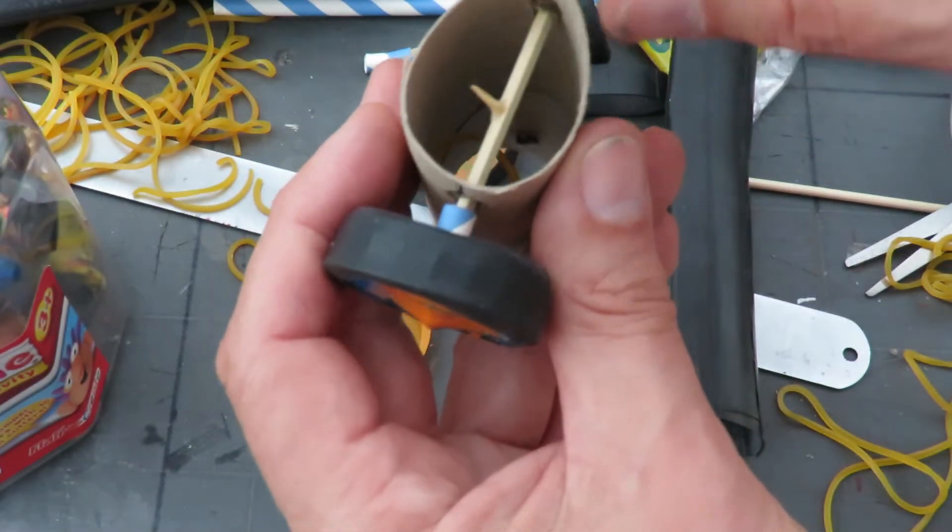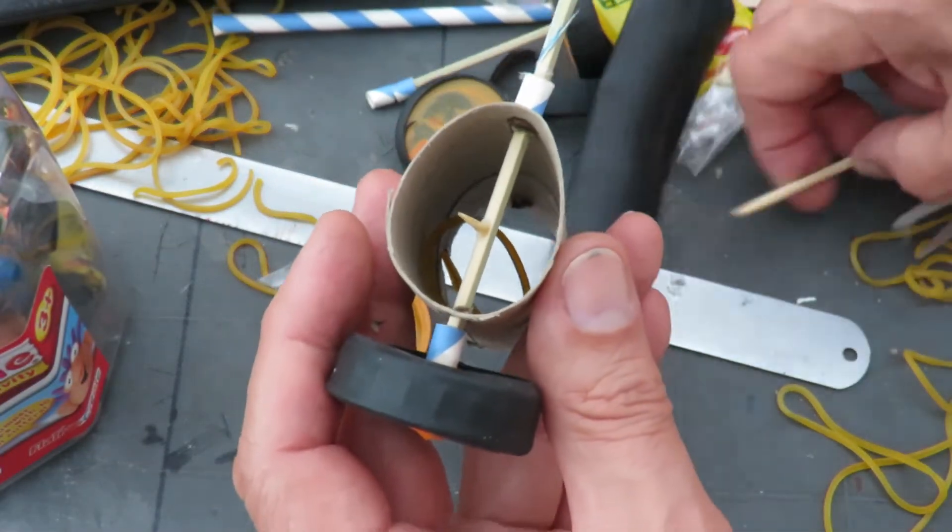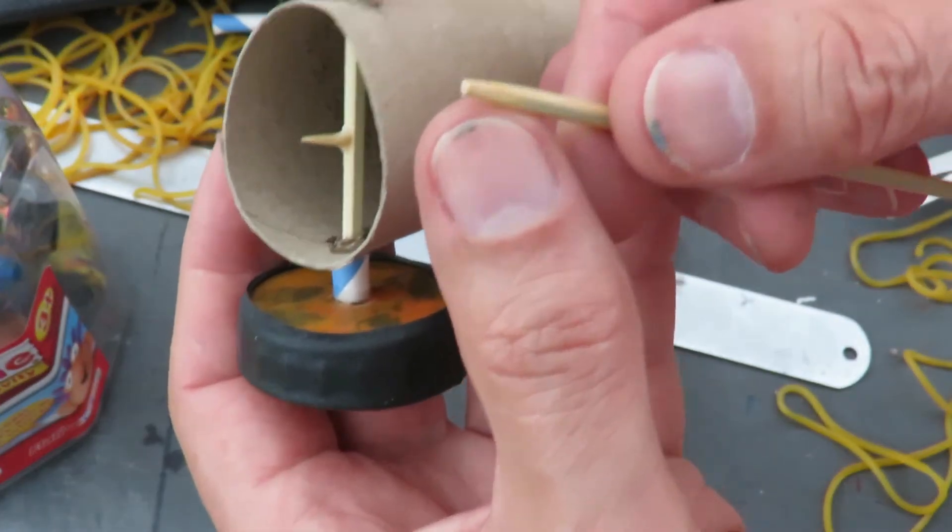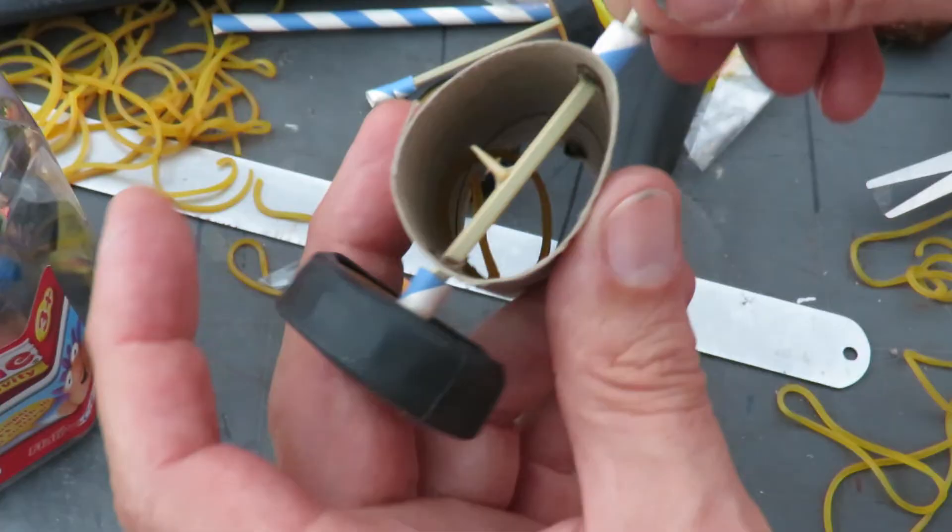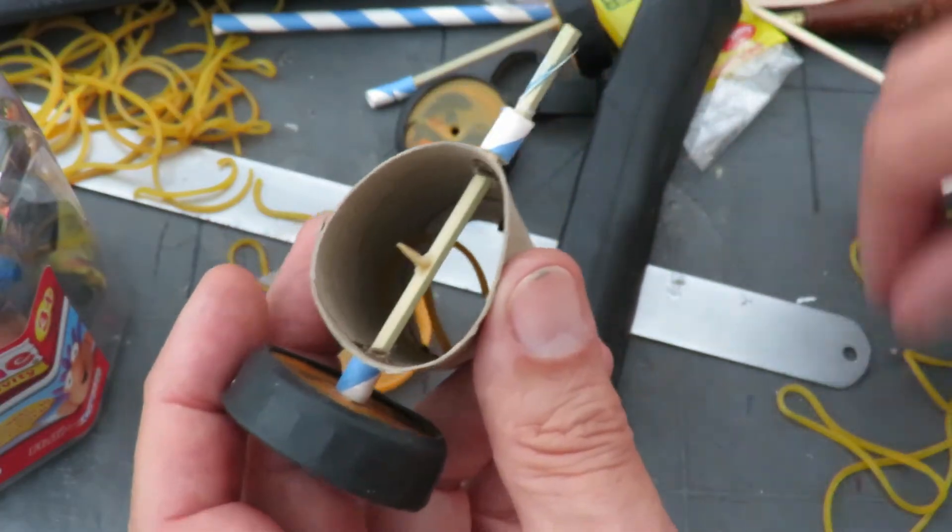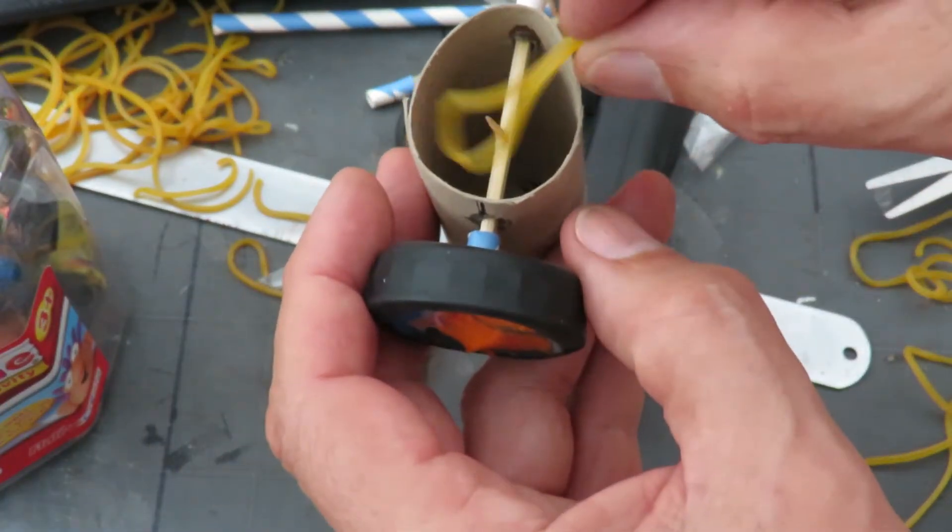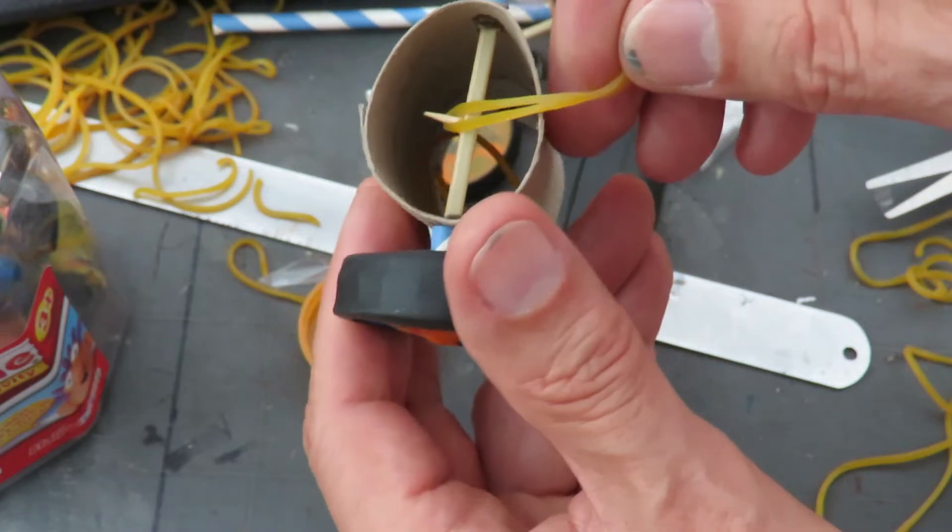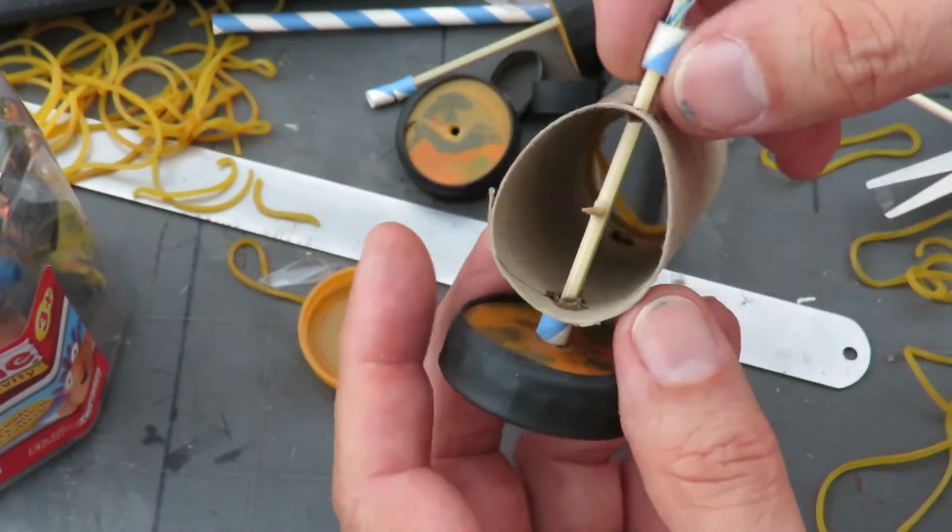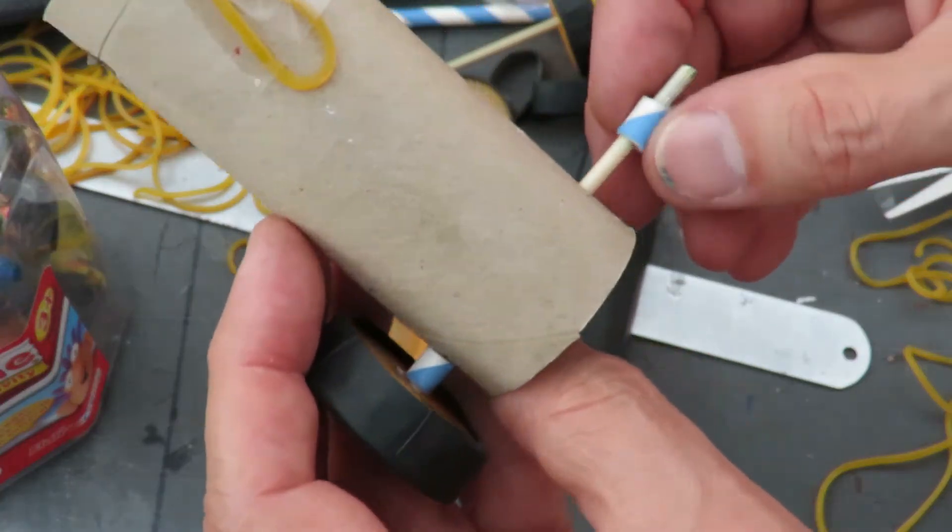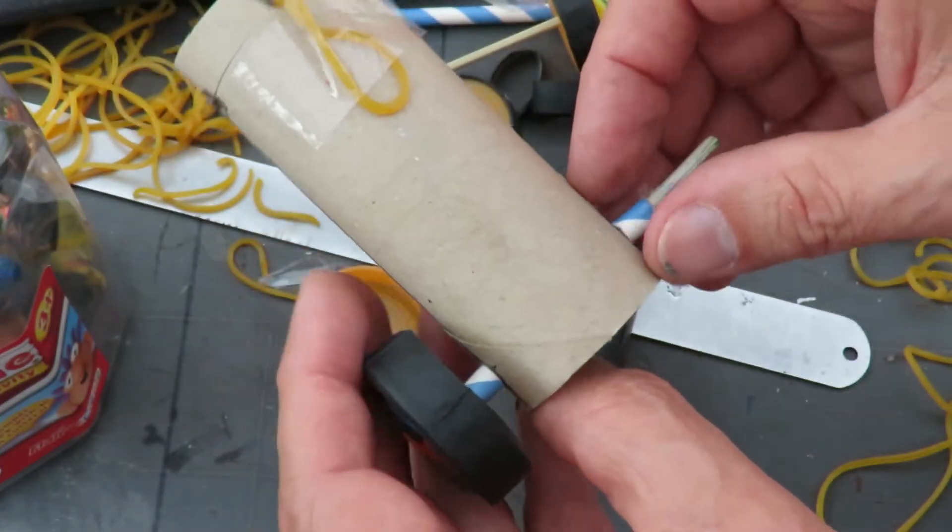In the middle of the axle I cut the tip off the barbecue skewer and glued it so we got that T-shape to make it easy to hook the rubber bands on. Again we've got a couple of short lengths of drinking straw there to hold the wheels away from the body.